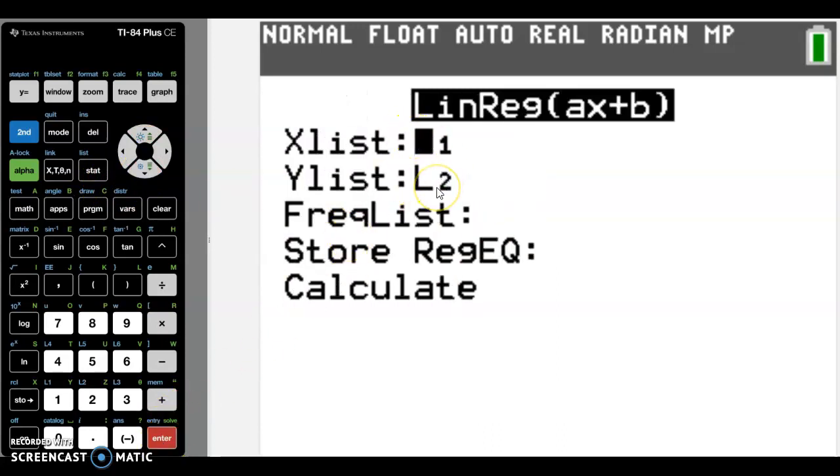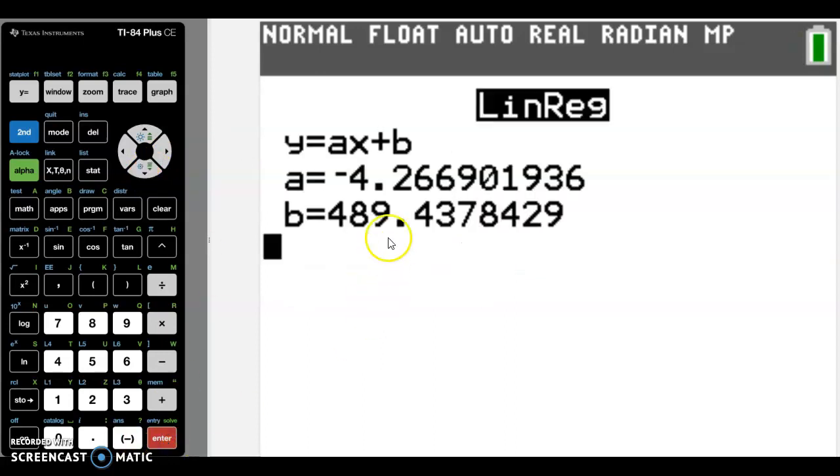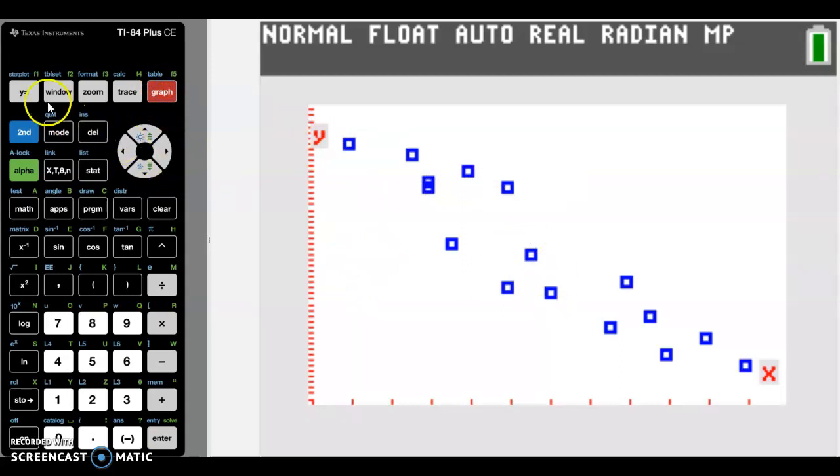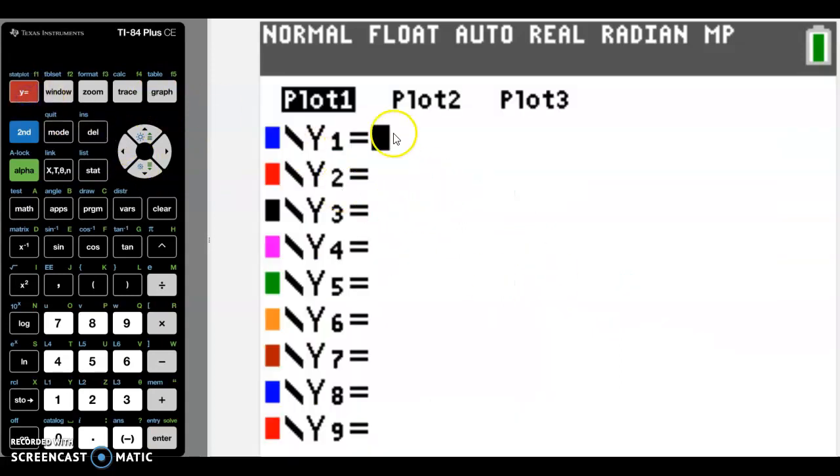List one, list two. And the key thing is to use this store regression equation. I won't use it for a minute and just show you what happens. We go down to Calculate. And there's the equation. But nothing else has happened. A couple of things are missing. One is that there's no R and R squared here. And secondly, in the graph, nothing's any different. So that's quite frustrating because what we actually want is in Y equals the graph to be there.